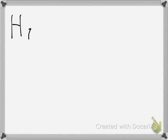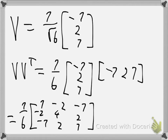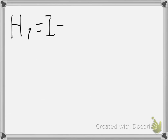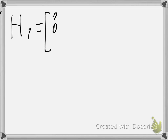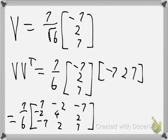So my first Householder transformation H1 will be given by the identity matrix minus 2 times v v transpose, which is the identity matrix minus 2 times (1/6) times the outer product matrix — so minus 1/3 times that matrix.